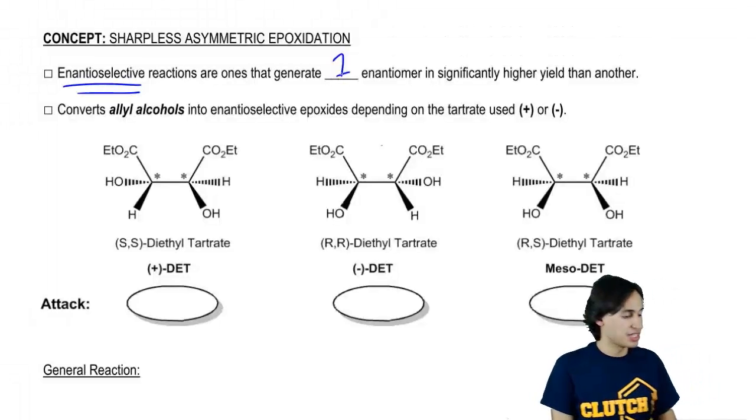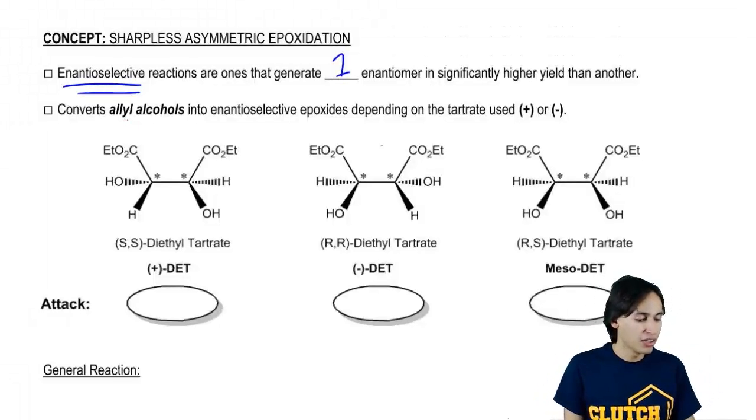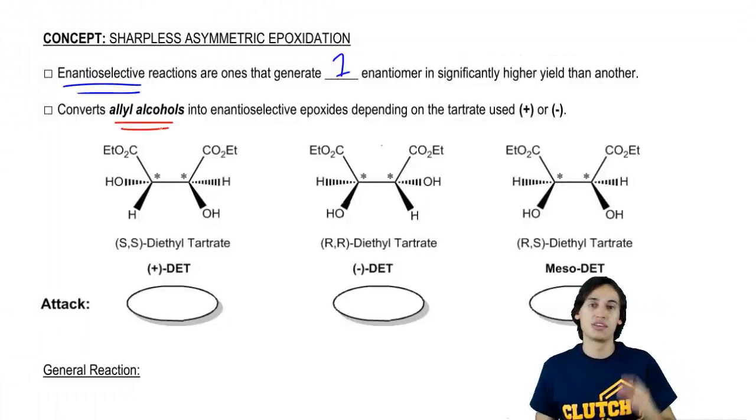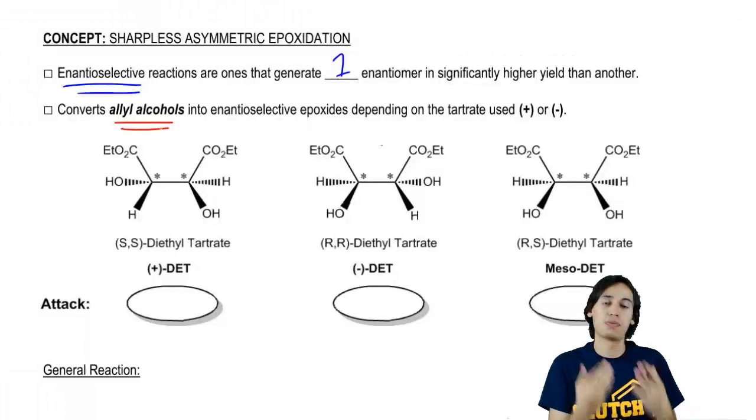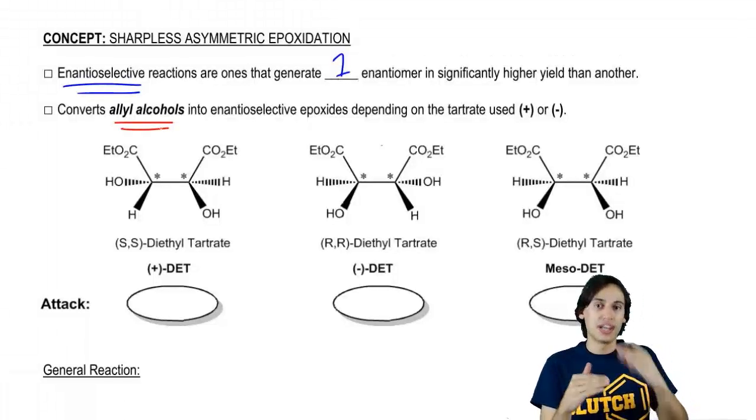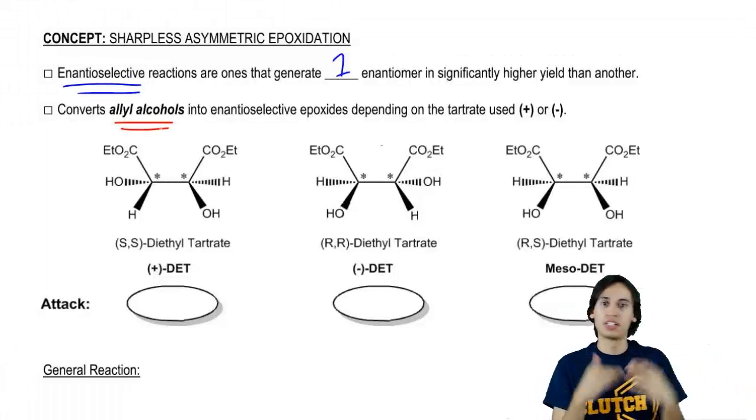So the way this reaction works is that it's going to convert allyl alcohols. That means it's an alcohol that has a CH2 and then a double bond. Allyl is a position that says that you're next to a double bond, not directly attached to one.